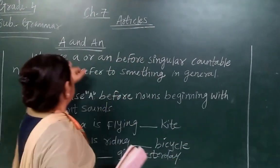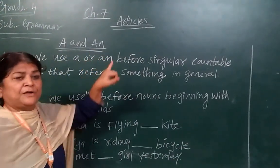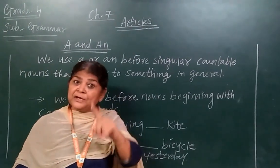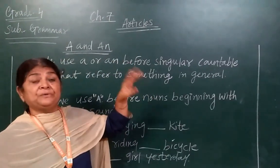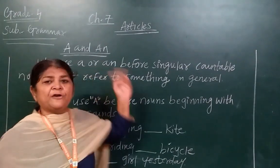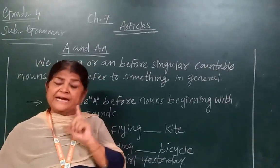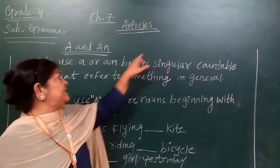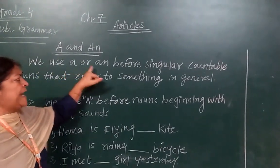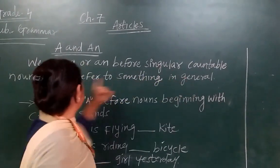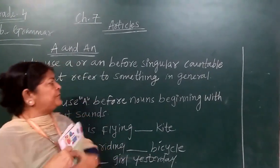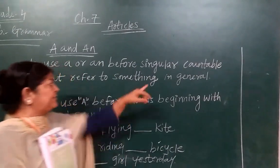Now I am going to teach you about A and An. We use A or An before a singular countable noun that refers to something in general. When you want to count a thing and talk about it generally, you write A. We use A before a noun beginning with a consonant sound.